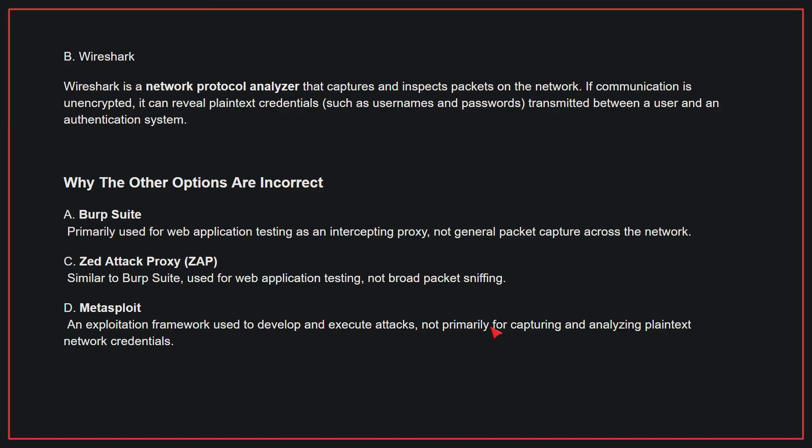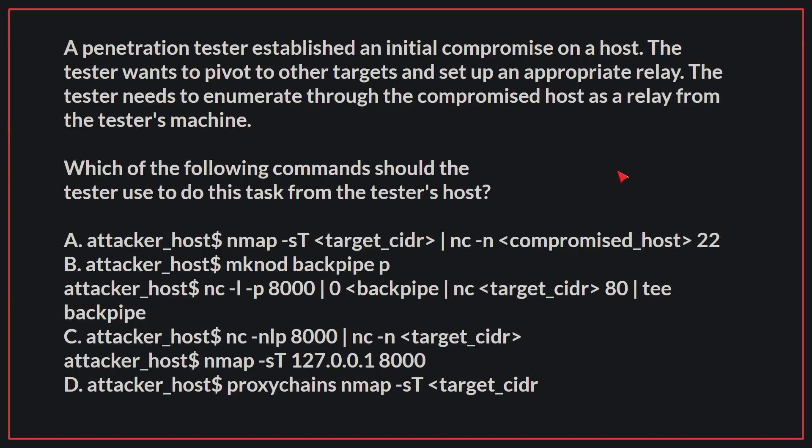Therefore, the correct answer is B. A penetration tester established an initial compromise on a host. The tester wants to pivot to other targets and set up an appropriate relay. The tester needs to enumerate through the compromised host as a relay from the tester's machine. Which of the following commands should the tester use to do this task from the tester's host?